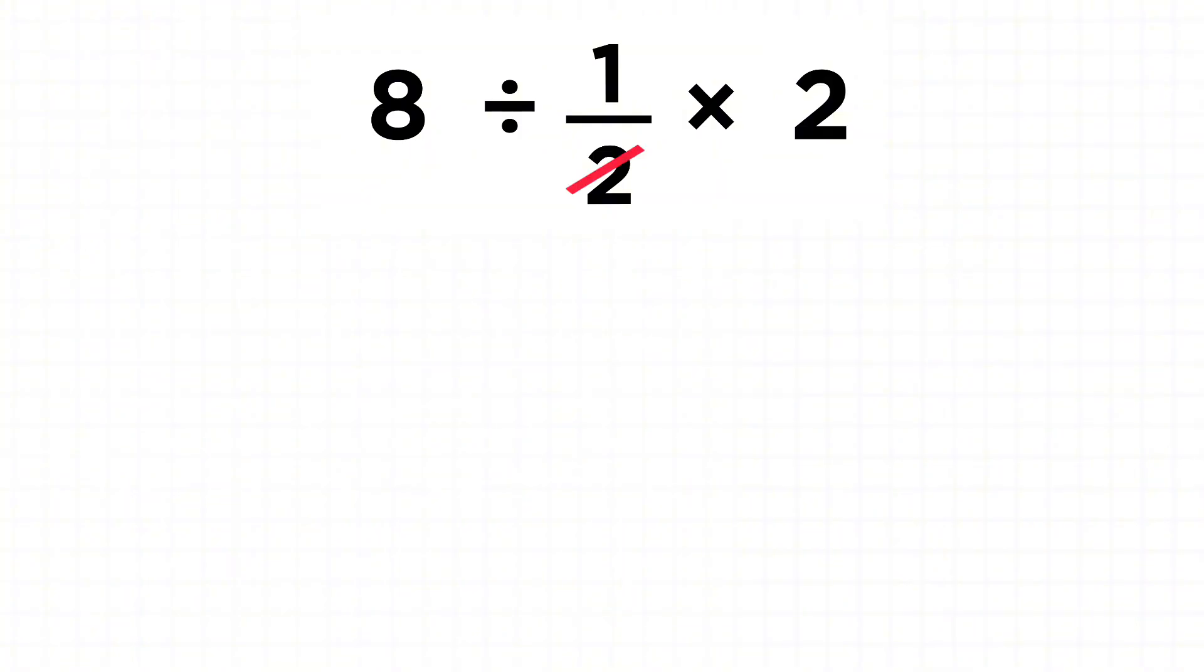First they'll cancel this 2 and this 2, leaving 8 divided by 1. They divide 8 by 1 which gives 8, and say the final answer is 8. But do you think it's correct?